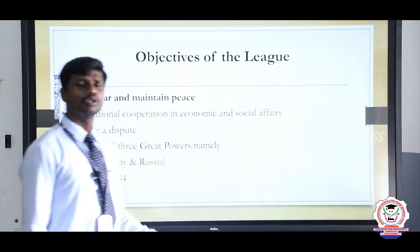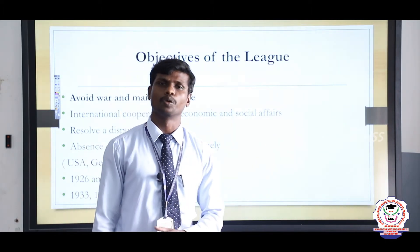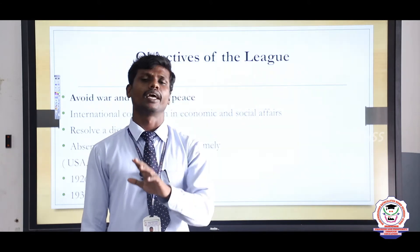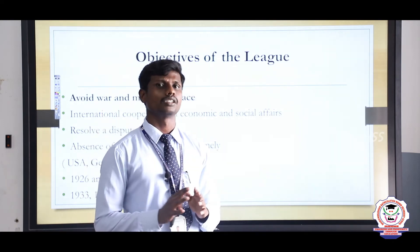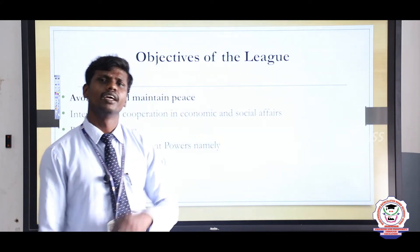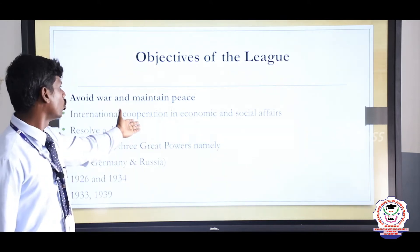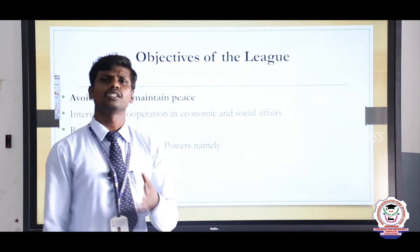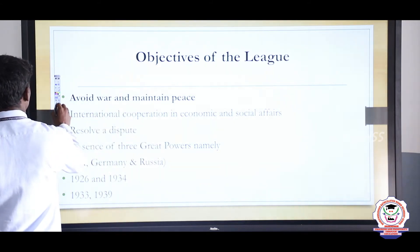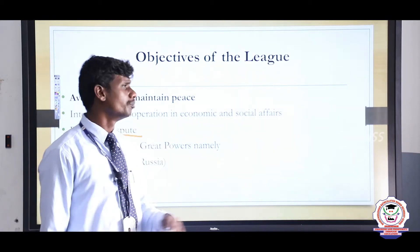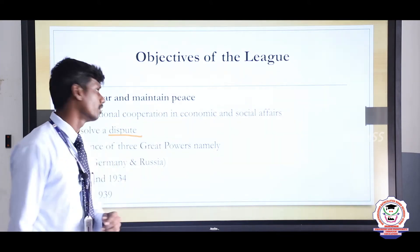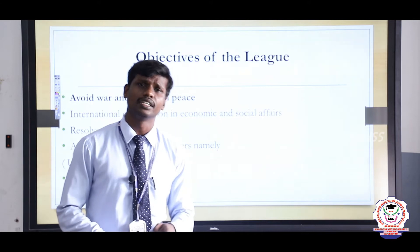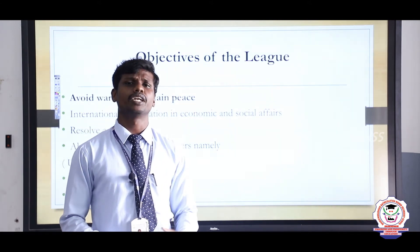Now the objectives of the League of Nations. There were two main reasons for its establishment: to make peace and to prevent war. It also promoted international cooperation in economic and social affairs, and resolved disputes — problems between member nations. However, it had a great drawback: three very powerful nations were not members. These were USA, Germany, and Russia. Woodrow Wilson proposed the League but did not convince his own country to join.